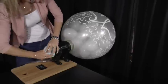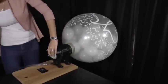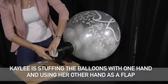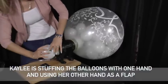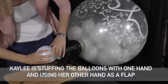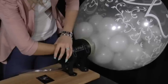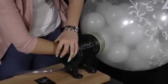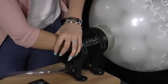Kaylee has never done this before. This is the first time she has ever used the T-Rex Mark II. You'll note she's using one hand as a flap. That stops the balloons from coming back out when the force of the air wants to push them back the other way.